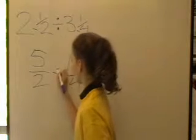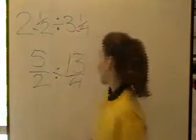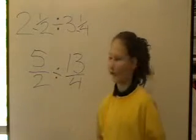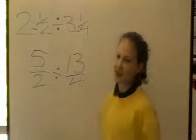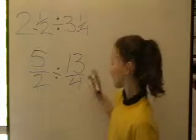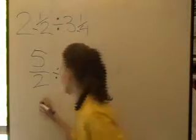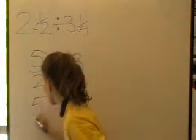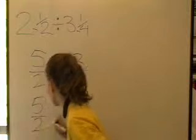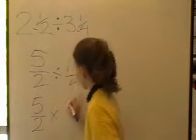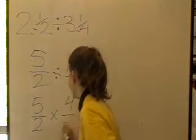So now that's your sum. 5 on 2 divided by 13 on 4. Now, because this is a divide by sum, we have to flip the second fraction. So, now it will be 5 on 2 times 4 on 13.